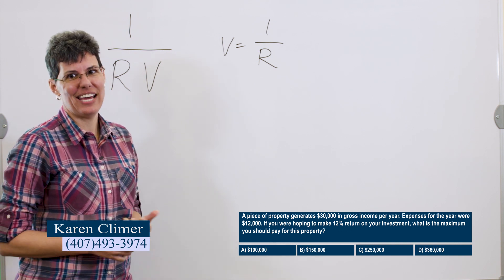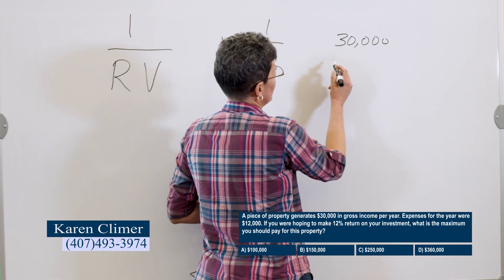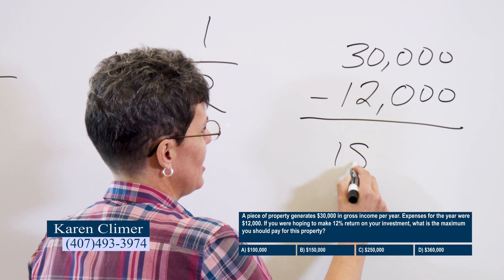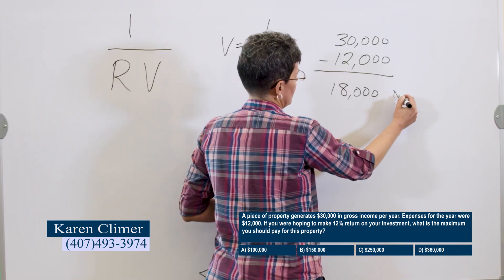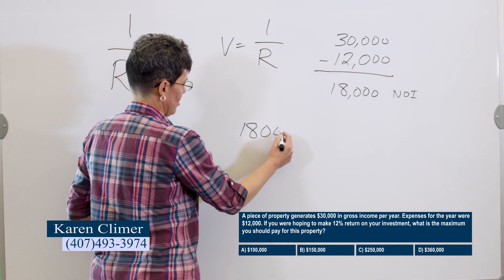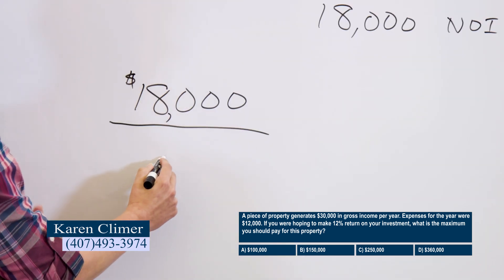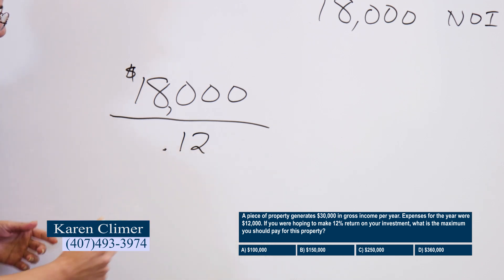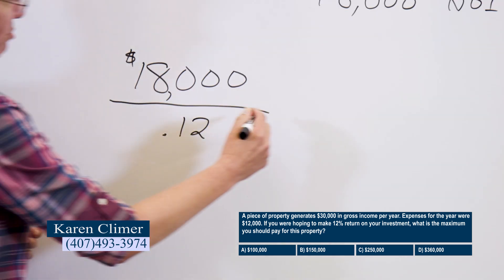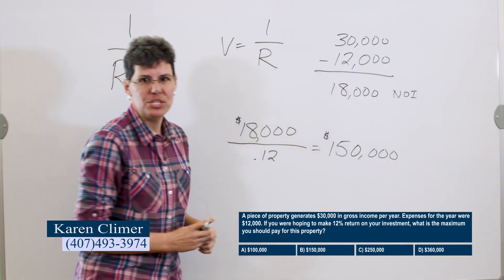In our question they don't give us the net income. They give us the gross income of $30,000 and the expenses of $12,000. So that gives us $18,000 is the net operating income. So we'll put that right here. The rate is always a percentage. It's 12%. So then you just put that in your calculator. Top divided by bottom. $18,000 divided by 12% will give you $150,000, which in this case is B.